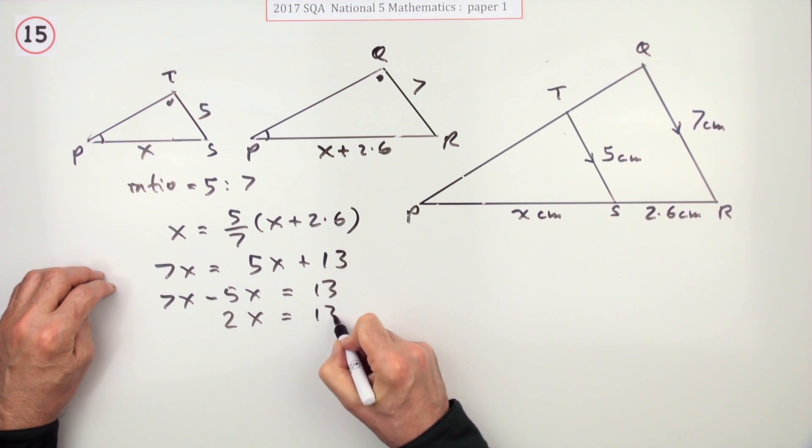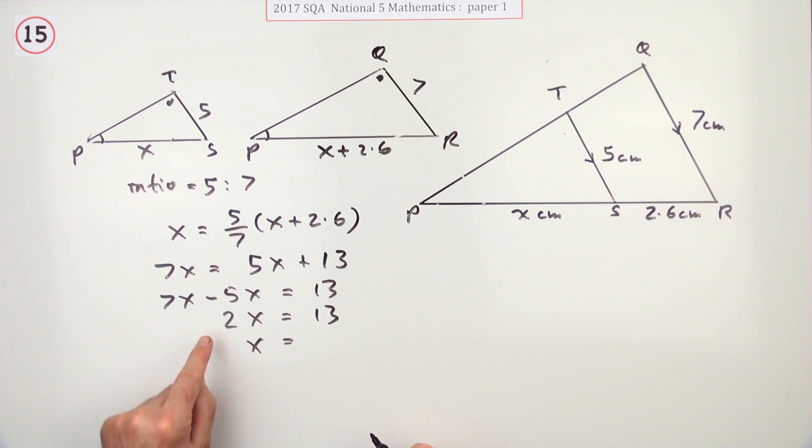Take that 2 across and divide. 13 upon 2. Or you can say x is 6.5. Now that actually is the answer. x is 6.5 because it was the number of centimeters. If you put centimeters in there, you're not going to lose a mark.